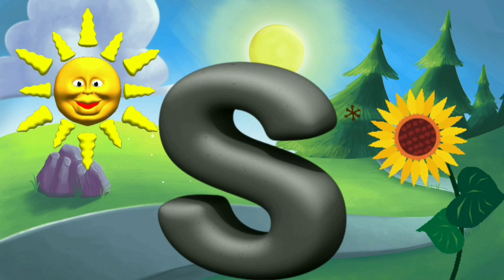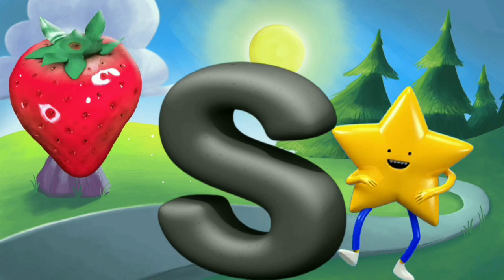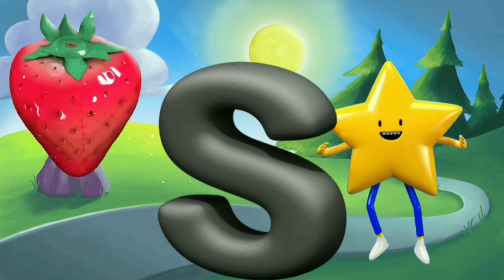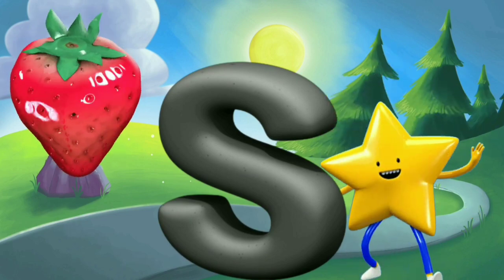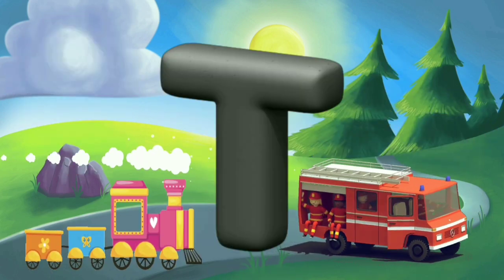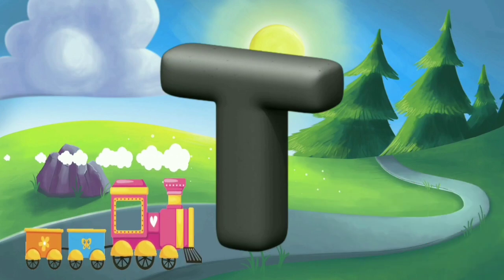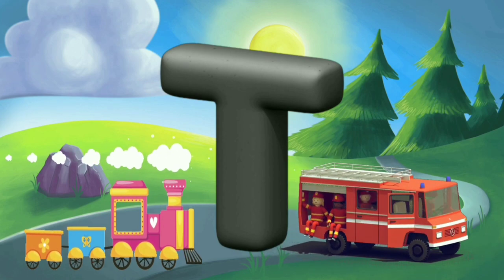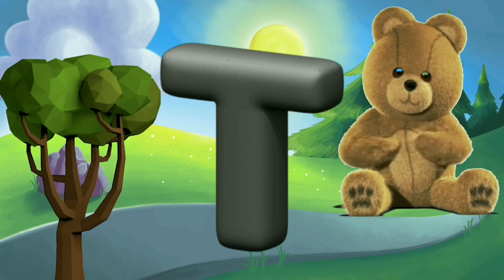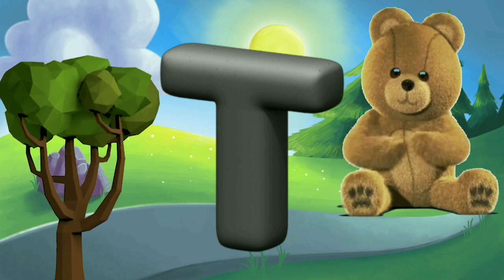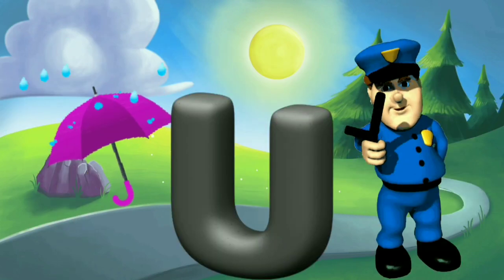R for boat and R for rocket. S for Sun and S for Sunflower. S for Strawberry and S for Star. T for Train and T for Truck. T for Tree and T for Daddy.